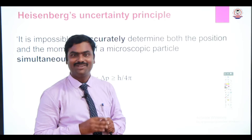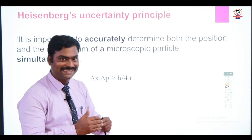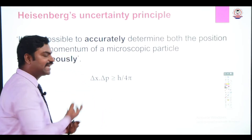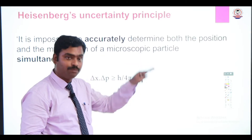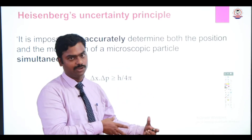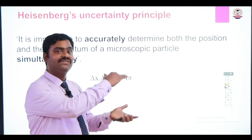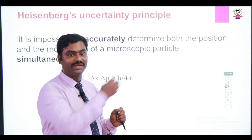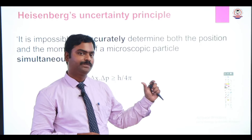Here h is Planck's constant, 4 is an integer, and π is 3.14 or 22/7. So we get h divided by 4π as a constant. If the del x value increases — that means if the error in position increases — the error in momentum decreases, so that the product remains equal to h/4π. Suppose if you want to decrease the error in position, del x will decrease, but automatically the error in momentum increases, because the product must always equal the constant value h/4π.